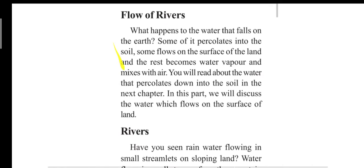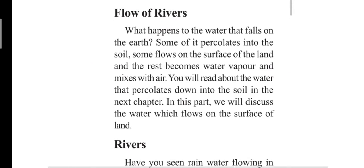What happens to the water that falls on the earth? Some of it percolates into the soil — percolate means sinking into the ground. Some flows on the surface of the land, and the rest becomes water vapor and mixes with the air. In this part we will discuss the water which flows on the surface of land and come to rivers.